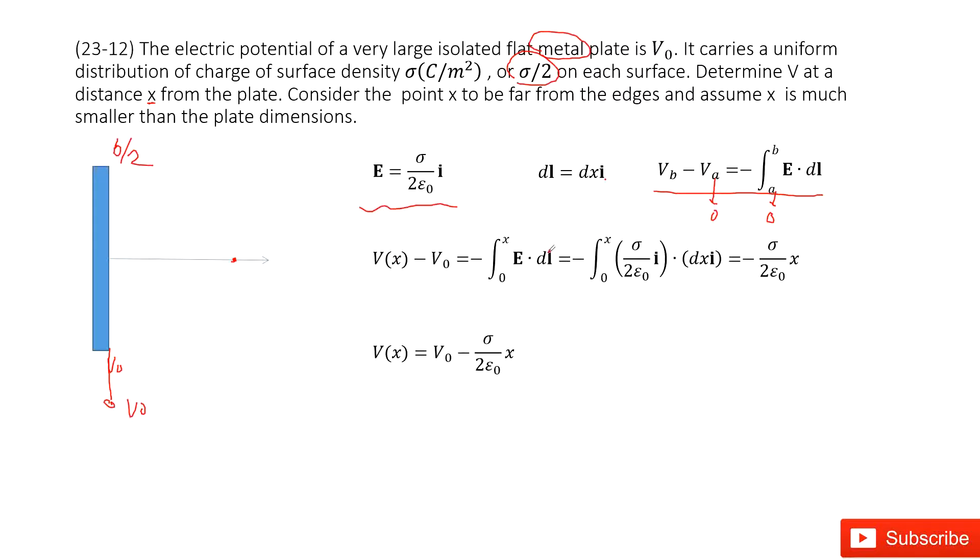So in this case, we just input this function. We replace a as 0, and then V_a becomes V₀. Then we input E and dℓ inside. You can see it's equal to this term. Then we add V₀ to both sides. We get the final answer there. Thank you.